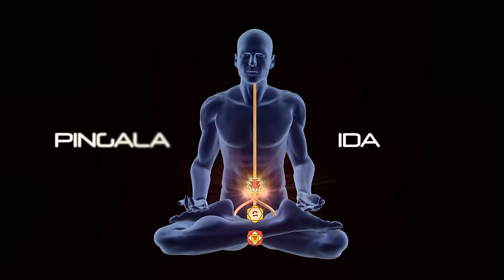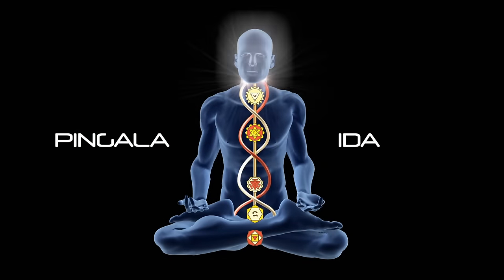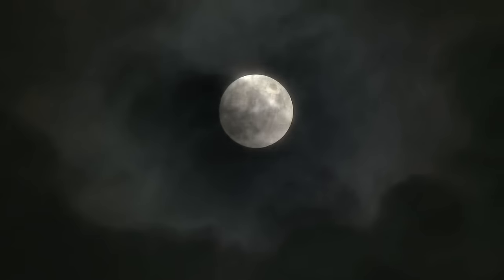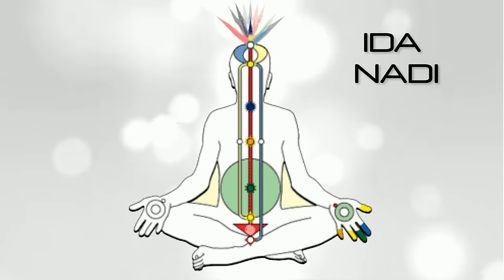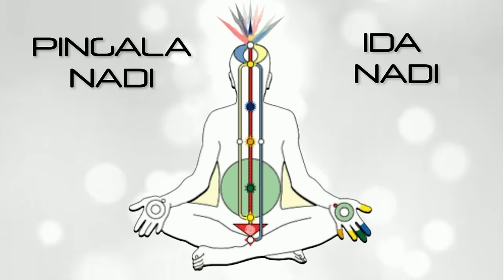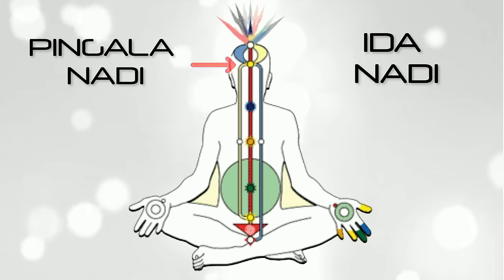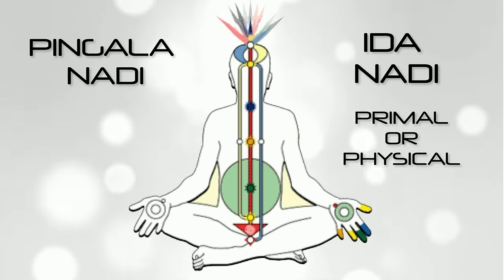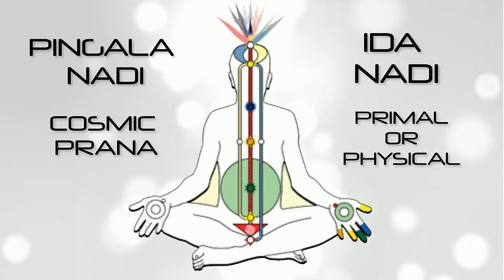Only three of these nadis are of central importance to kundalini. First is the sushumna nadi, the central channel moving up and down the spinal nerve — the largest of them all. Then there is the ida nadi, our yin or feminine energy symbolized by the moon, beginning at the root chakra and spiraling upwards. The pingala nadi is our yang or masculine energy symbolized by the sun, beginning at the third eye and spiraling downwards.